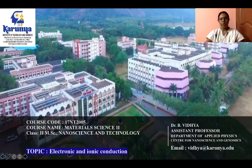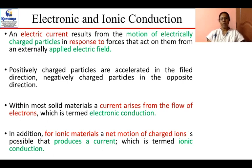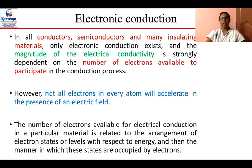Following our previous video on electrical conduction, we look in more detail at electronic and ionic conduction. Electronic conduction involves the motion of electrically charged particles in response to an applied field; current arises from the flow of electrons. In ionic conduction, the net motion of charged ions produces the current. This is the prominent difference between electronic and ionic conduction.